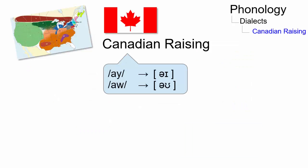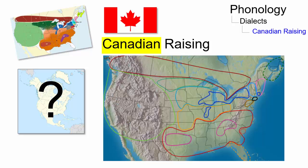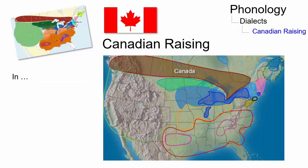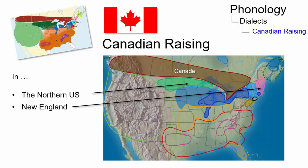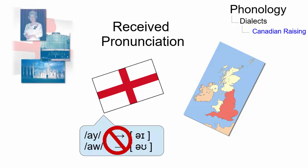Although this phonological process is called Canadian raising, this name is not only restricted to Canada and not all Canadians share this feature. The raising is also common in some regions of the northern US, such as New England, the Indiana North, Philadelphia, and New York City. In the standard British English phonological dialect RP, Canadian raising does not occur.